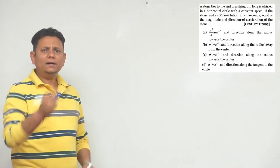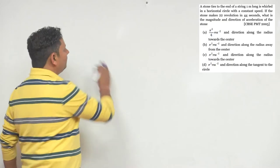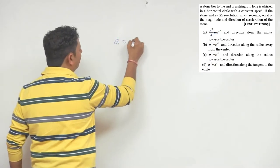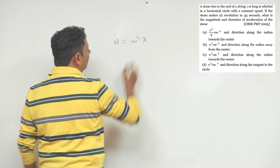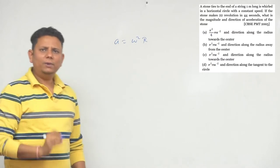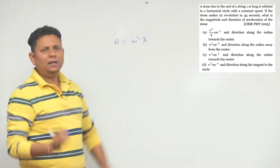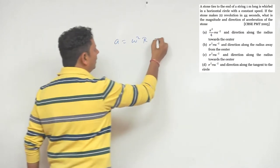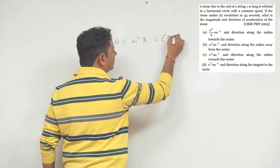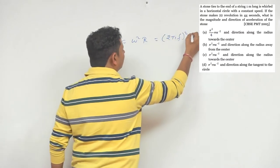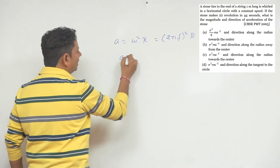We have to find the acceleration, which will be equal to ω²r. To get omega, we can use ω = 2πf, so acceleration becomes a = (2πf)² × r, which gives us a = (2πf)²r.